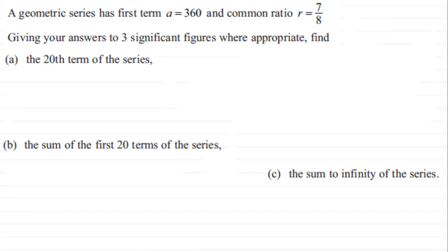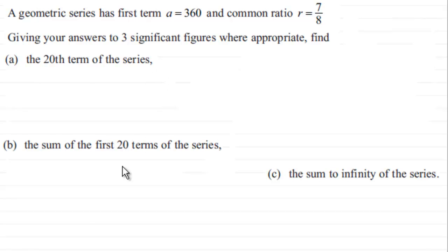Here we have a question on geometric series. Give yourself a moment to pause the video if you'd like to read it through. Welcome back. What we've got here is a geometric series that has first term a equals 360 and a common ratio R which equals seven-eighths. Given your answer to three significant figures where appropriate, find the twentieth term of this series.